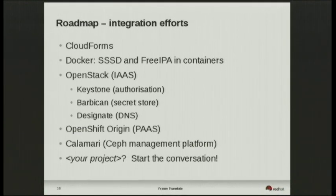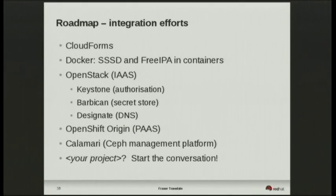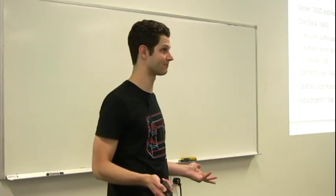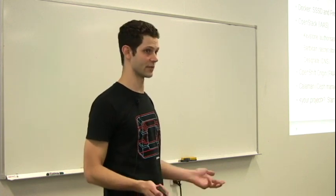OpenStack integration — looking at ways to integrate Keystone, which is an authorisation service for OpenStack; Barbican, which is a secret store; and Designate, which is going to be a DNS component of OpenStack. OpenShift Origin, the platform-as-a-service — we're looking at ways to integrate OpenShift with FreeIPA, including the Enterprise tier. Calamari, which is a Ceph management platform. And if you have a project that you think would benefit from integrating with FreeIPA identity management, let's get the conversation started.